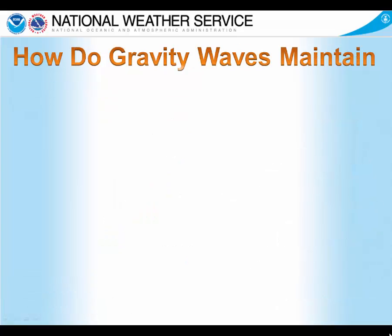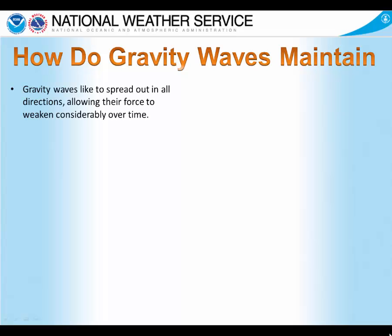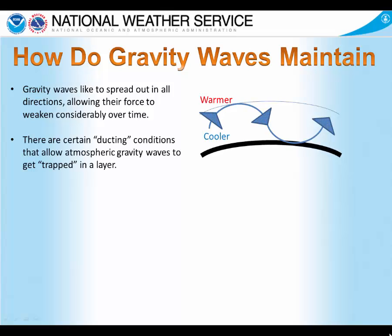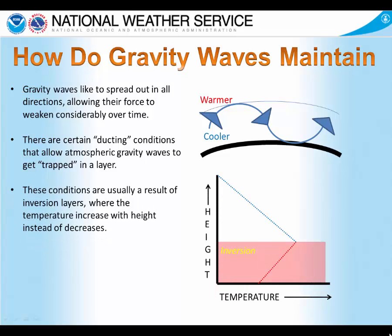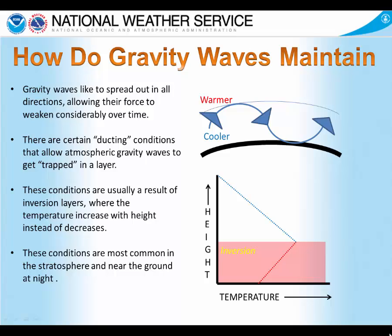We've talked about the initiation of gravity waves, but the next question is how do they maintain themselves? Because gravity waves like to spread out in all directions, which would allow their force to weaken considerably over time. We can get certain conditions in the atmosphere — called ducting conditions — that allow atmospheric gravity waves to get trapped in a layer and maintain their strength. This most often happens when there's an inversion, meaning temperature actually increases with height instead of decreasing, which normally occurs in the troposphere. These conditions are most likely to be found near the stratosphere and also near the surface, especially at night.